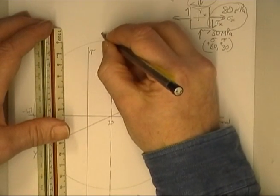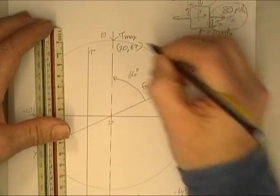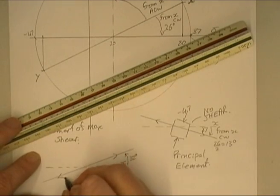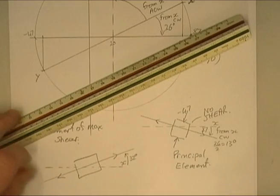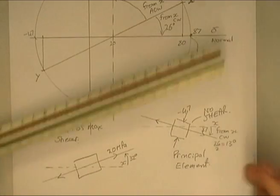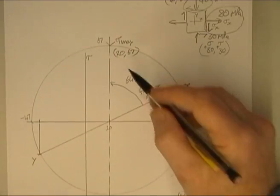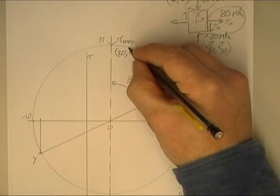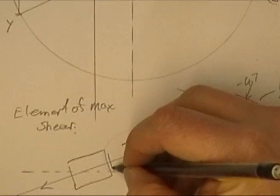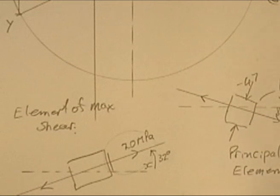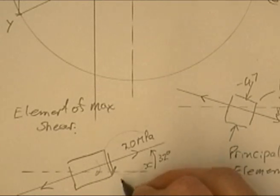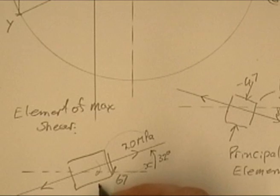This point here has a height of 67, so its coordinates are (20, 67). Along this line is my normal stress of 20 megapascals. Draw the element — 20 megapascals. The shear for this point is positive 67. A positive 67 shear needs to rotate my element clockwise, so my arrow must go that way at 67 megapascals. All other shear arrows must follow the same pattern.